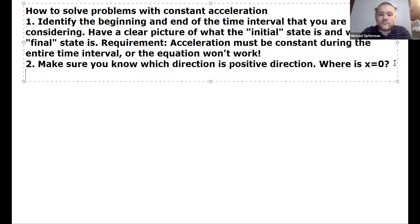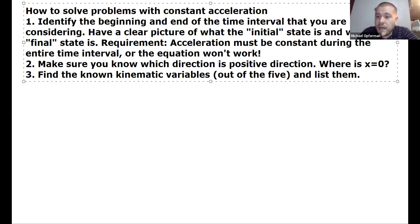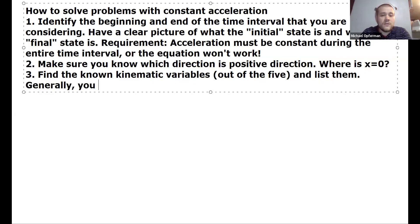You want to carefully read the question again and find the known kinematic variables out of the five I mentioned and list them. So, generally, you will have three knowns for these kind of problems. Not always, but generally. Generally, you will have three out of the five kinematic variables known. So this is really key. Make sure that you list off what those three variables are. Make sure that they're actually known. Make sure about whether they're positive or negative. Make sure about their value. And this will organize your whole thought process for how you're going to approach that problem.